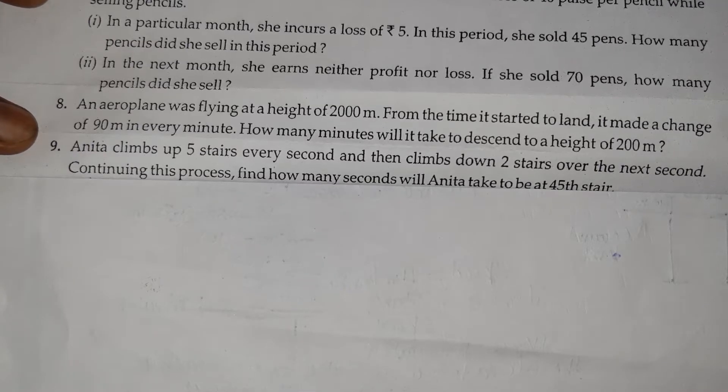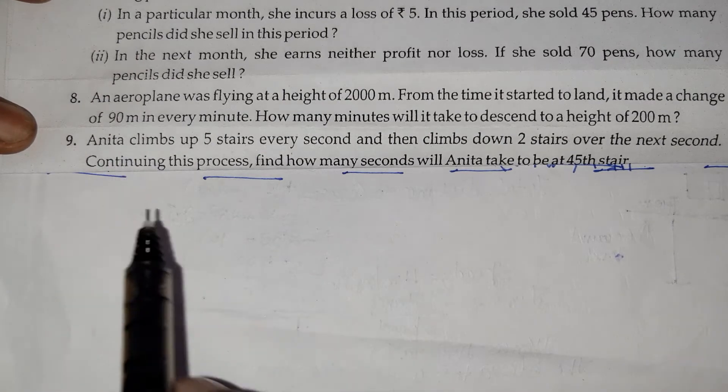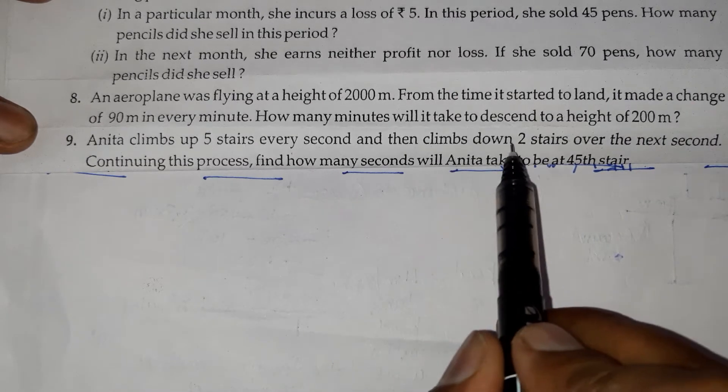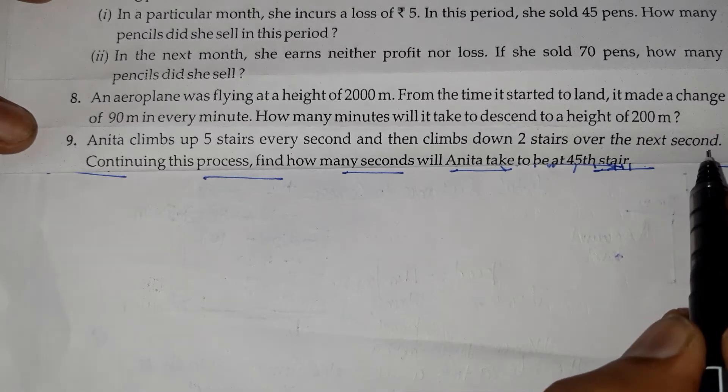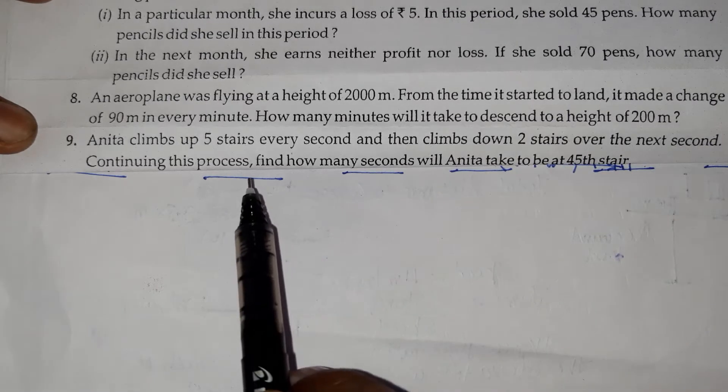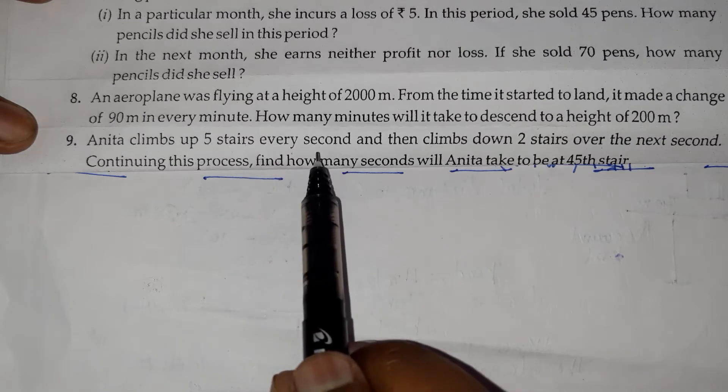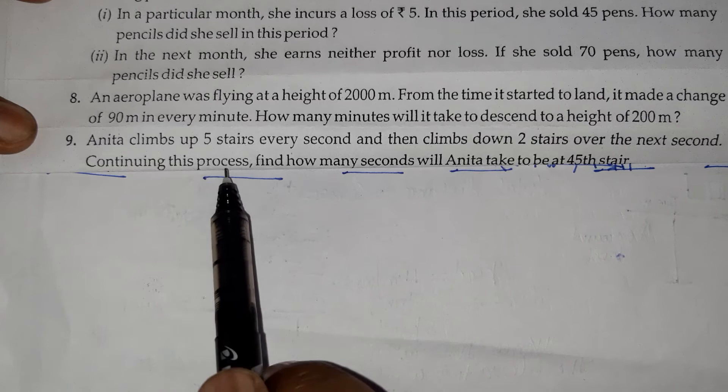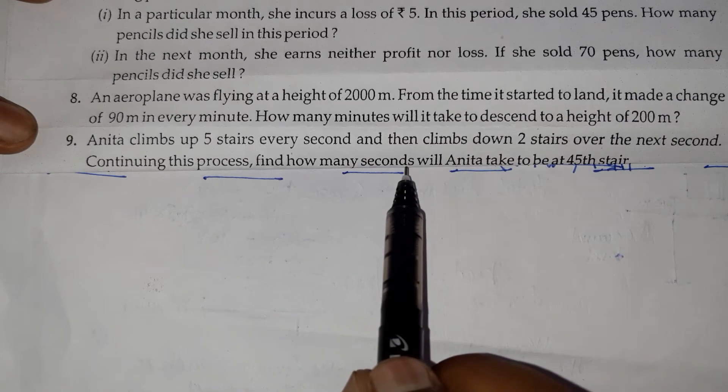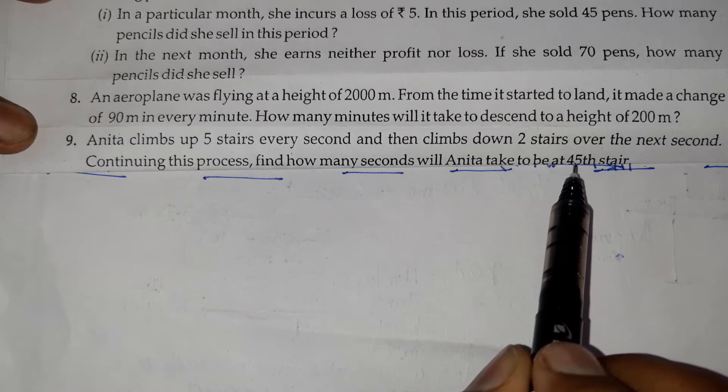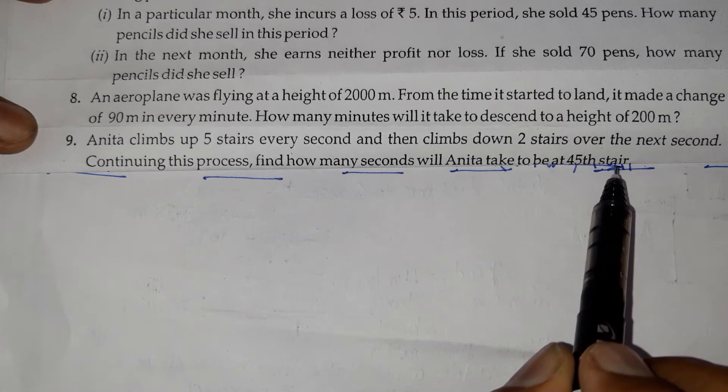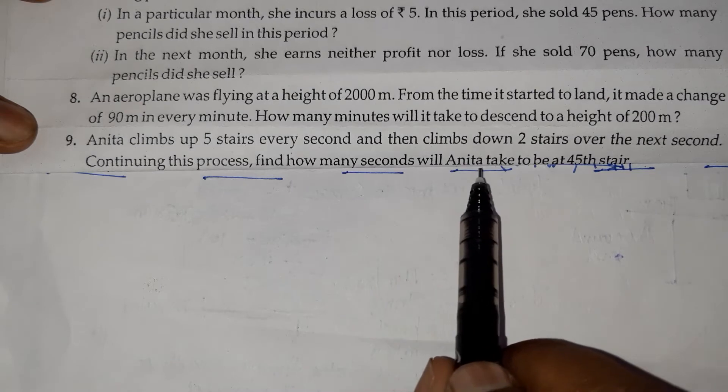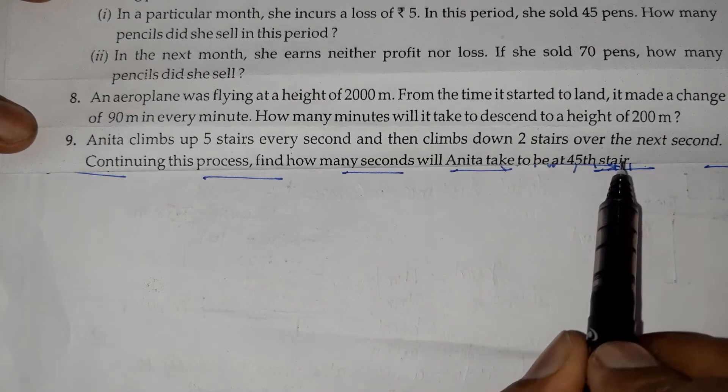The problem states: Anita climbs up 5 stairs every second and then climbs down 2 stairs over the next second. Continuing this process, find how many seconds will Anita take to be at 45th stair.